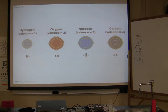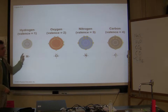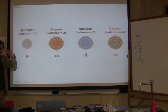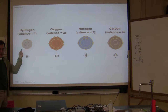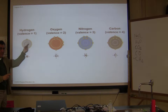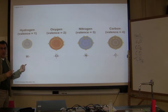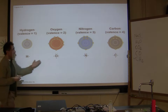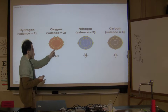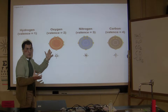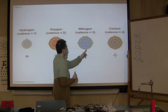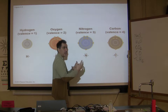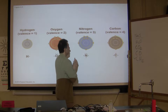Hydrogen has only one electron outside of it, so it can form a covalent bond with something that can contribute one electron. The maximum hydrogen can get is two electrons total. Oxygen has two free electrons outside of it, so it can interact with two other things. Nitrogen has three.